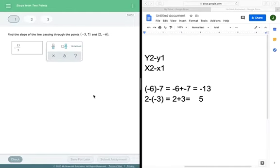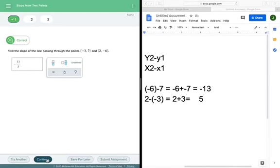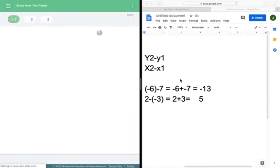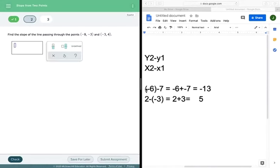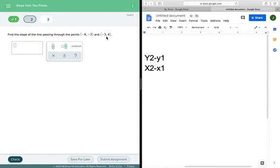Another one. Same situation here. I'll get rid of these. x1, y1, x2, y2. So my y2 is 4 minus and then my y1 is -3, and that's going over -3 because that's my x2 minus and then I have -8.